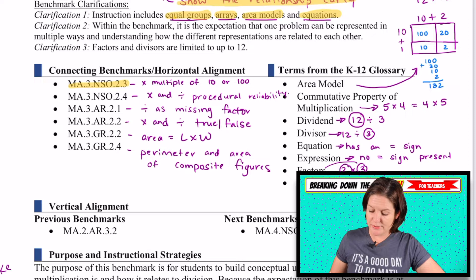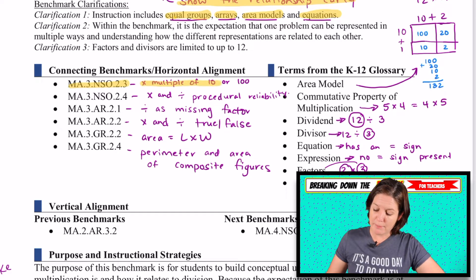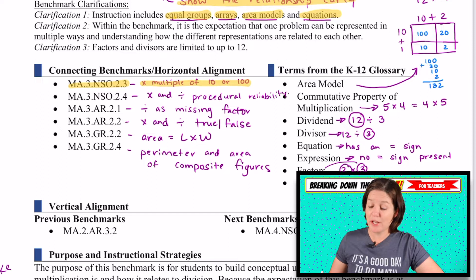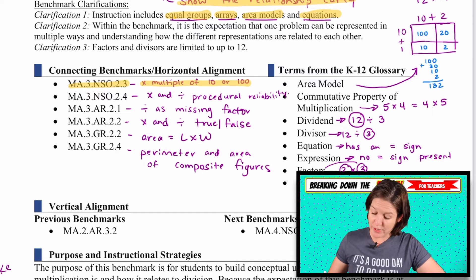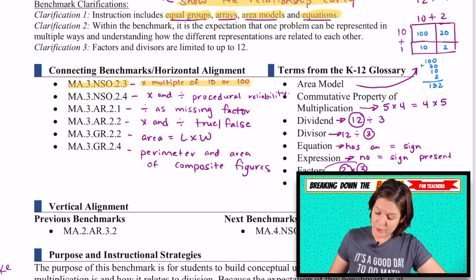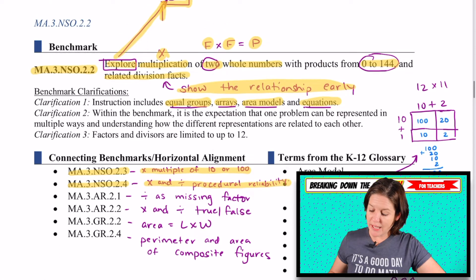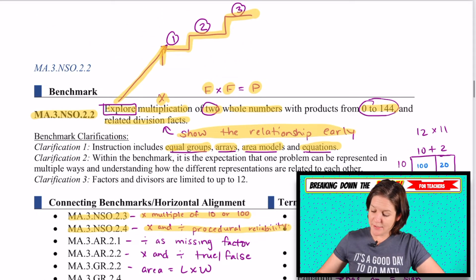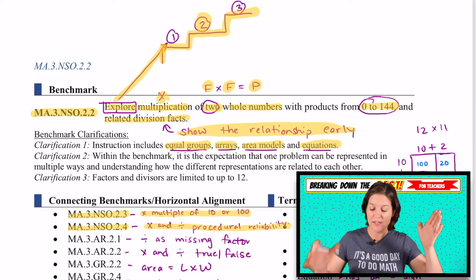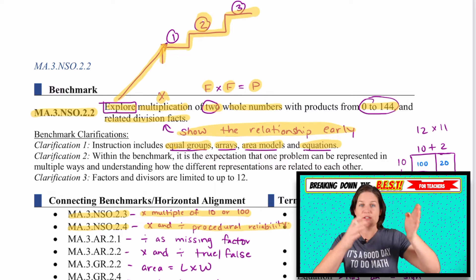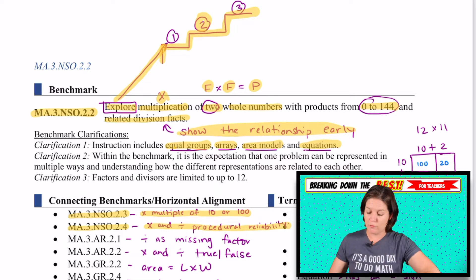MA.3.NSO.2.3 is multiplying by multiples of 10 or 100 — huge for fourth grade. We've got MA.3.NSO.2.4, which is multiplying and dividing with procedural reliability — that is step two. So we can see how this 2.2 connects into 2.4 later on.